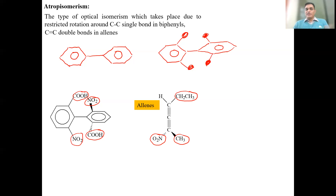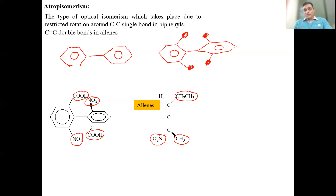So, atropisomerism is a type of optical isomerism that takes place in biphenyls due to restricted rotation around the carbon-carbon single bond. It also takes place in allenes due to restricted rotation around the two double bonds present between three carbon atoms.